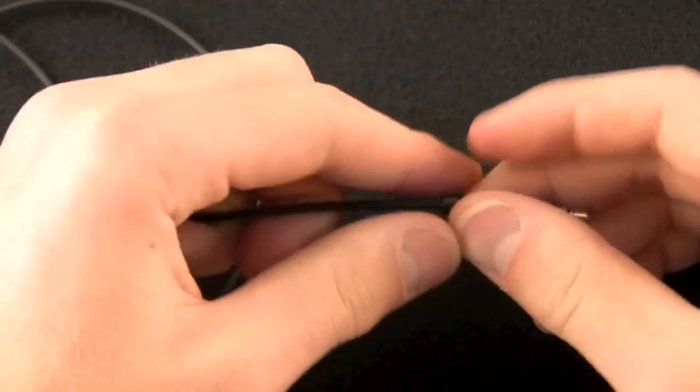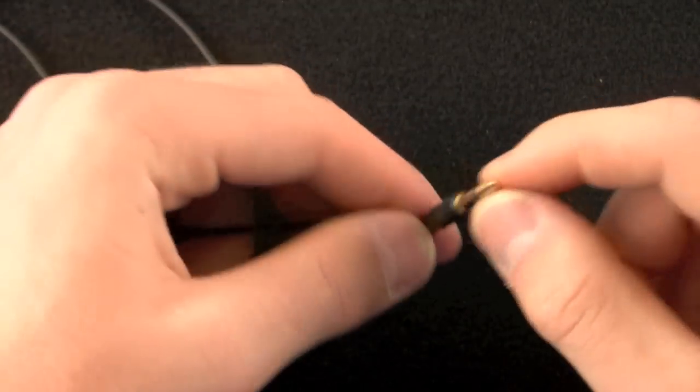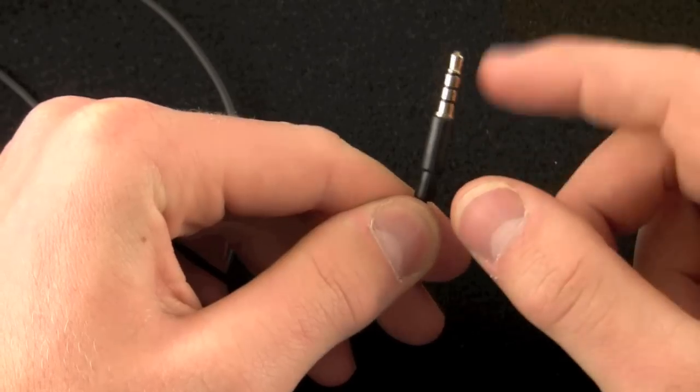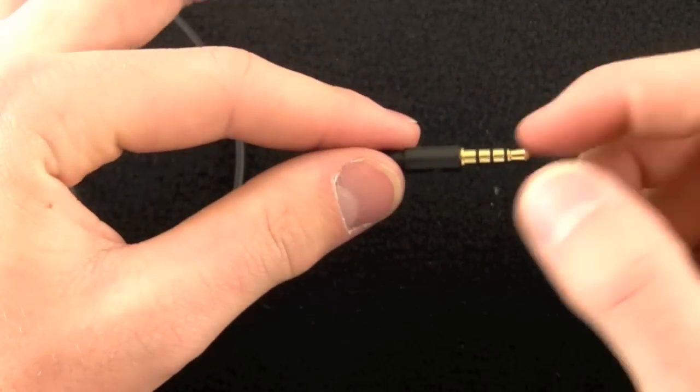Now as we go further down the line, and this cable is pretty long, we are going to find the 3.5 millimeter headphone jack. In fact, there are the three lines, so that means there is a microphone or data interface.